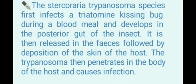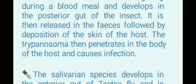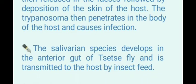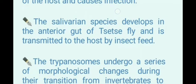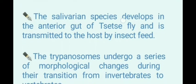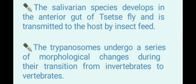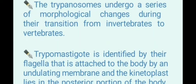The stercorarian Trypanosoma species first infect a triatomine kissing bug during a blood meal and develop in the posterior gut of the insect. It is then released in the feces followed by deposition on the skin of the host. The Trypanosoma then penetrates the body of the host and causes infection. The salivarian species develops in the anterior gut of the tsetse fly and is transmitted to the host by insect feed. The trypanosomes undergo a series of morphological changes during their transition from invertebrates to vertebrates.